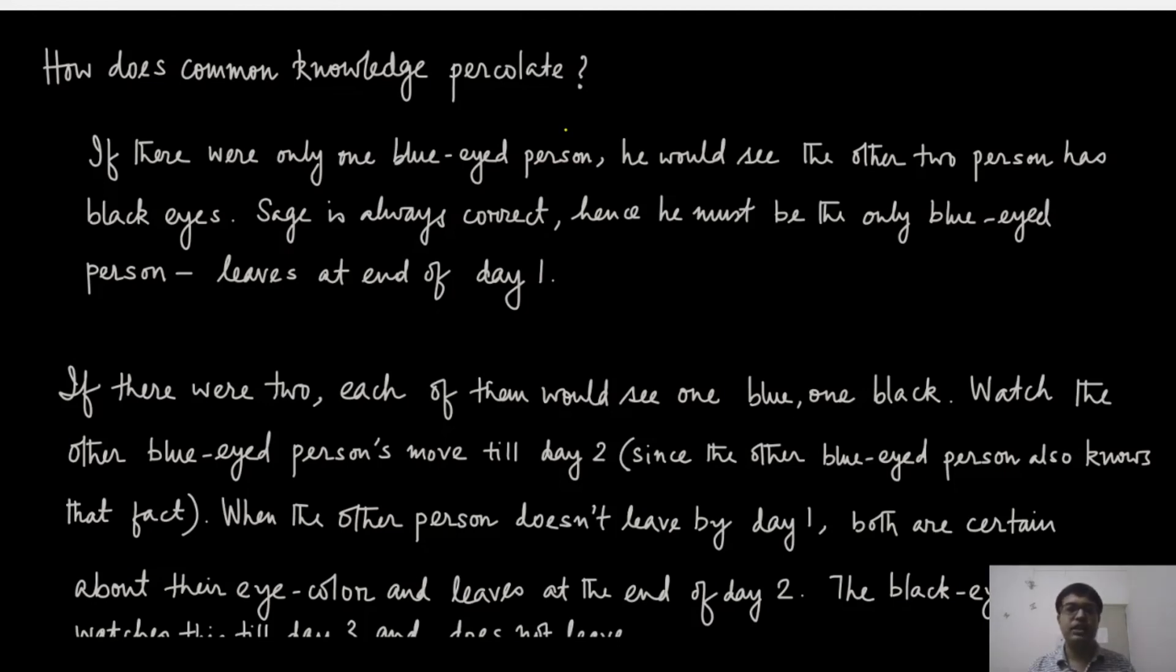If there were two blue-eyed people, then each one of them will see that the other two people have one black eye and one blue eye. Because the sage has said that there exists at least one blue-eyed person, he might still think that his own eye color is not blue - maybe this other blue-eyed person is the only one. So let us wait for his move. This is actually an implication of common knowledge because he also assumes that the other person is using the same deduction technique. On day two, when he sees that the other blue-eyed person did not leave - because if he was the only blue-eyed person, then he would have left at the end of day one - he also understands that his eye color is also blue. Therefore, both persons will leave simultaneously after day two.